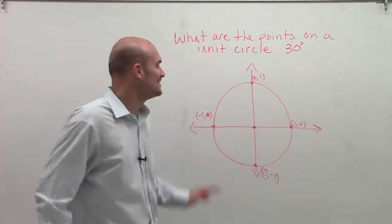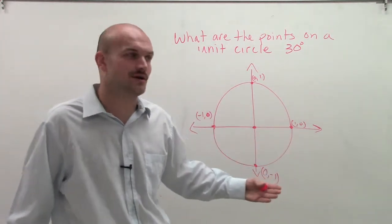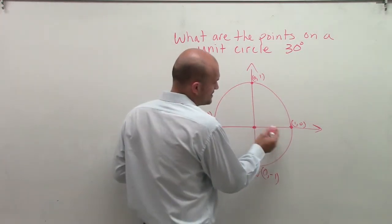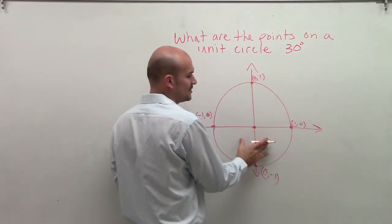Don't worry about my mustache, by the way. OK, so anyways, what about other angles or other points on the unit circle? And one point that I want to look at is, how about if I said, here we talked about all the way around the unit circle was 360 degrees.